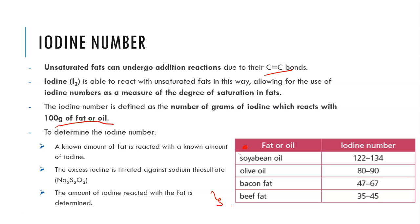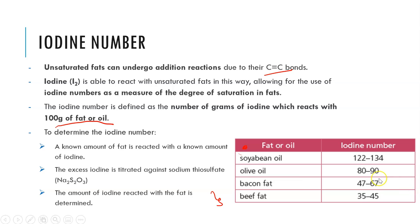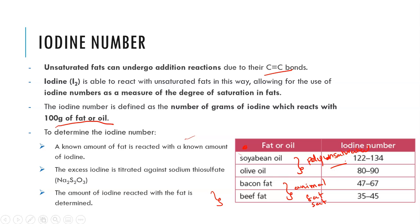Looking at different oils — soybean oil, olive oil, bacon fat, beef fat — we can see that the iodine number is higher in soybean oil, which makes sense. It's a plant oil so it's more likely to be unsaturated. Whereas something like beef fat and bacon fat are both animal products and are more likely to be saturated, whereas plant materials tend to give us polyunsaturated oils. Plant materials are more likely to give us unsaturated fats, hence why they're liquids at room temperature because of the presence of those double bonds.